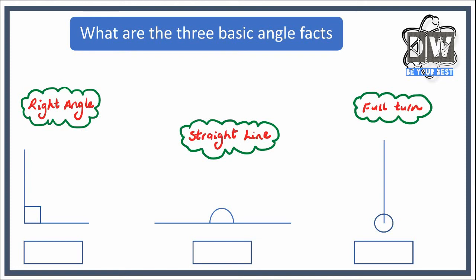First one, we've got a right angle. Hopefully you can see it's a right angle because of the box here that symbolizes that this angle is a right angle. We should know that is 90 degrees. Whether it says it or not, that box is telling us that it is 90 degrees.